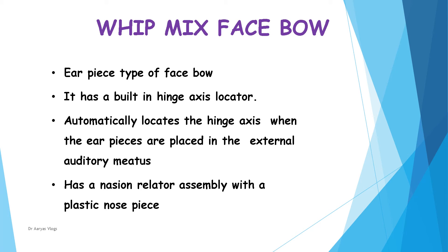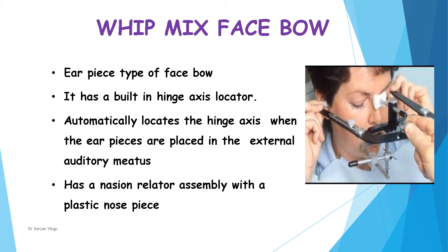The Whip Mix facebow is an earpiece type of facebow because the posterior reference point is the external auditory meatus and the anterior reference point is nasion. It has a nasion-related assembly with plastic nose pieces. It has a built-in hinge axis locator and automatically locates the hinge axis when the earpieces are placed in the external auditory meatus.